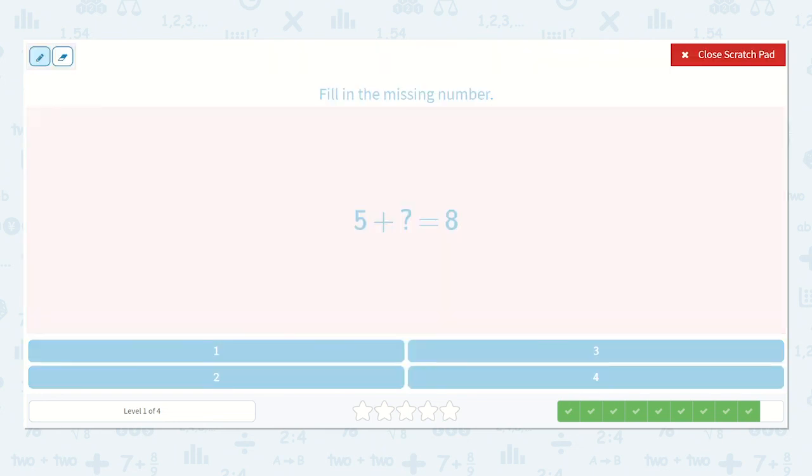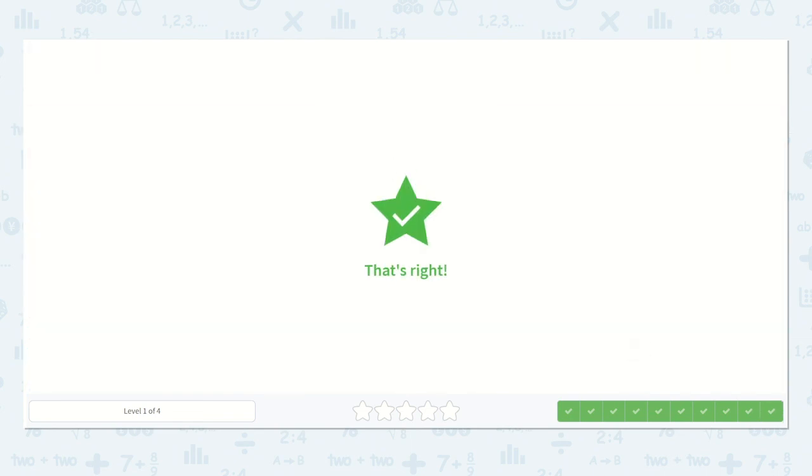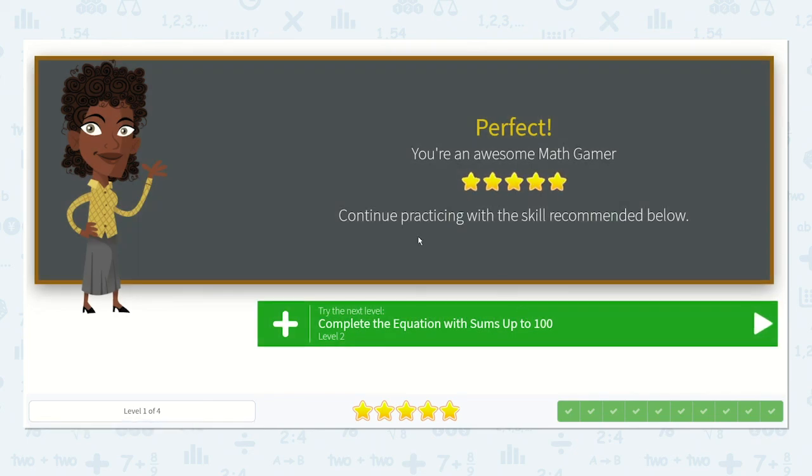Now we have 5 plus a number is equal to 8. So 5, 6, 7, 8. That's 1, 2, 3. So 5 plus 3 is 8. Here's the 3. Fantastic work, my friends.